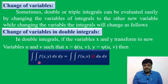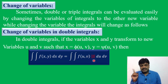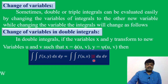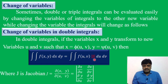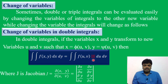The extra term introduced here is |J|, the modulus of the Jacobian. J is the Jacobian, defined as J = ∂(x,y)/∂(u,v), which is the determinant of: ∂x/∂u, ∂x/∂v in the first row, and ∂y/∂u, ∂y/∂v in the second row. If the Jacobian value is negative, we take the modulus so it becomes positive.